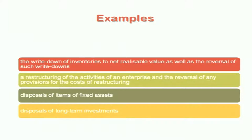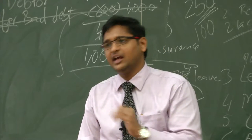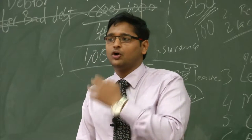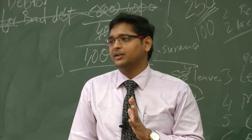Disposal of items of fixed assets is another exceptional item. If you dispose of many fixed assets in the current year, the amount might become material, so you should disclose it separately as an exceptional item. Disposal of long-term investments is also an example — purchase and sale may be normal, but if in a particular year you dispose of all or the majority of your long-term investments, that item should be disclosed separately as an exceptional item. Any changes in legislation with retrospective application that have a material impact on your current income and expenditure account should also be disclosed separately.